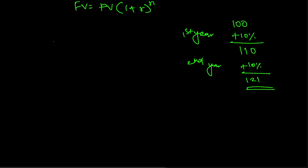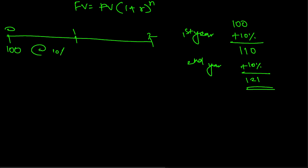Now how do I do this using the formula? If I draw a timeline — 0, 1, 2 — here I am depositing 100 which is growing at the rate of 10 percent and it becomes 110, then again it is growing at the rate of 10 percent and it becomes 121.